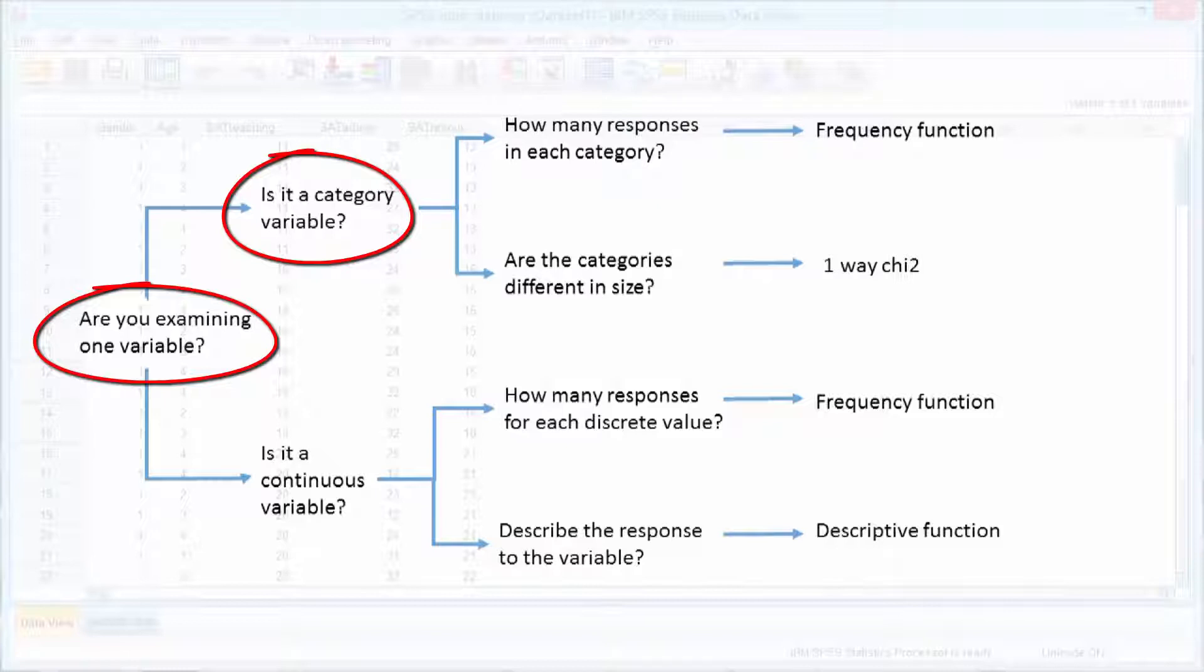Secondly, if we want to determine if the responses to each of the categories are significantly different, we use a one-way chi-squared test.